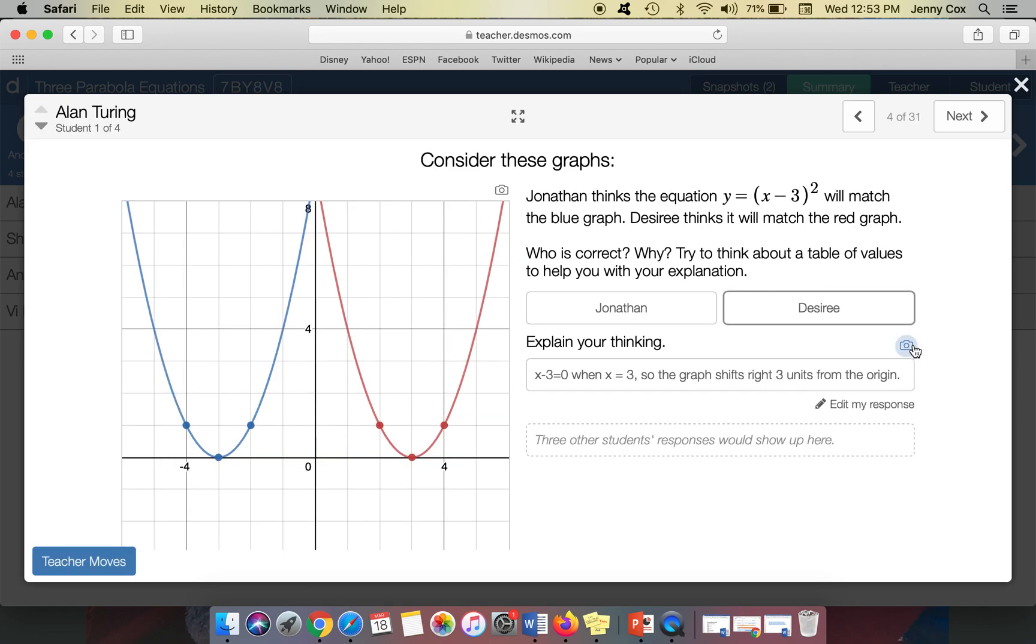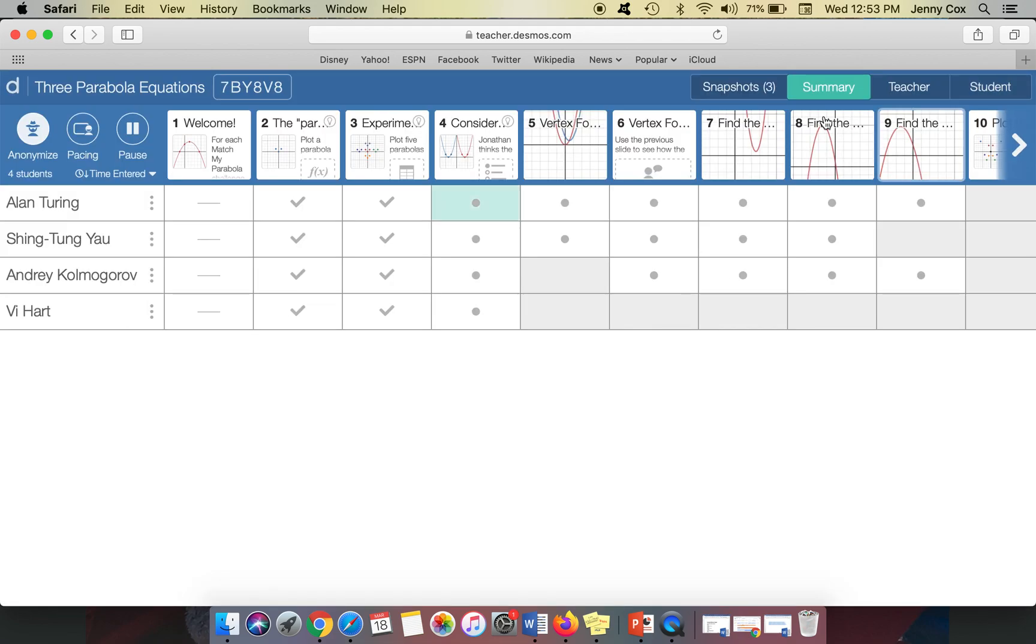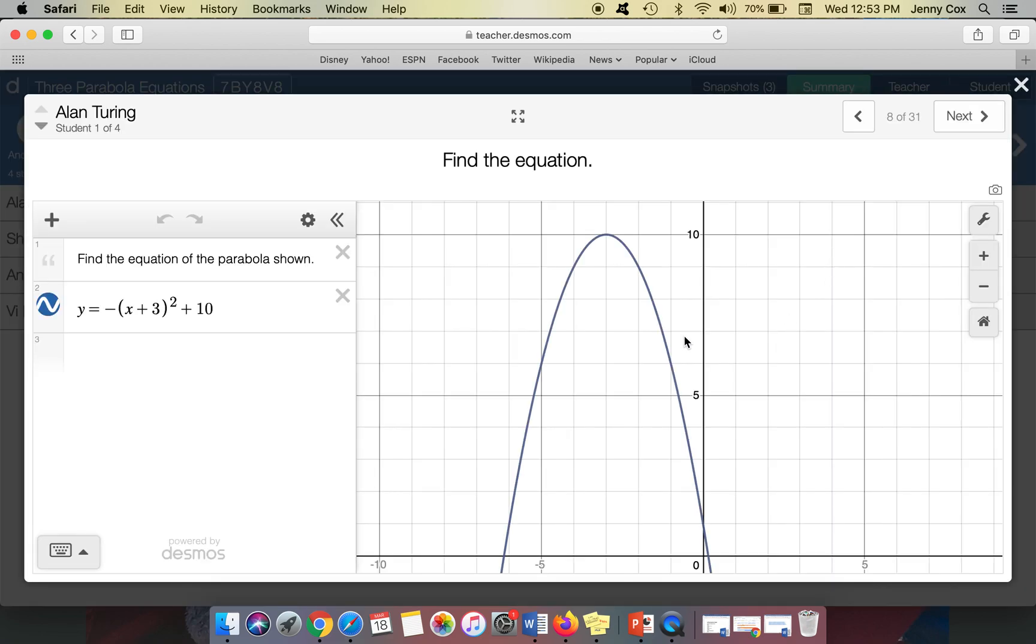And so maybe I want to show that these answers are maybe connected. And so I can click this little button. I call it the snipping tool, but it's really the snapshots tool. And so if you click on it, it will now go up here on your dashboard. So under snapshots.